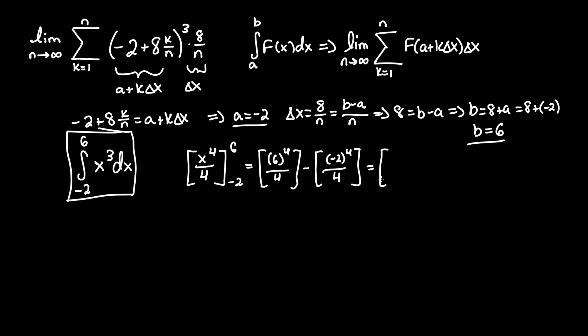And this equals 1296 over 4 minus positive 16 over 4. And this yields 1280 over 4 giving us our final answer of 320 which is the same thing as the integral we made here and this entire sum. These three are all technically equivalent.